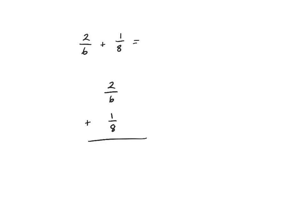We call these common denominators. I'm going to look for a multiple of six that is also a multiple of eight. Counting by sixes: 6, 12, 18, 24, 30, and so on. Counting by eights: 8, 16, 24, 32, 40, and so on. I'm looking for something they have in common — I see 24 in both lists. We call this the least common multiple because it's the smallest multiple they share.